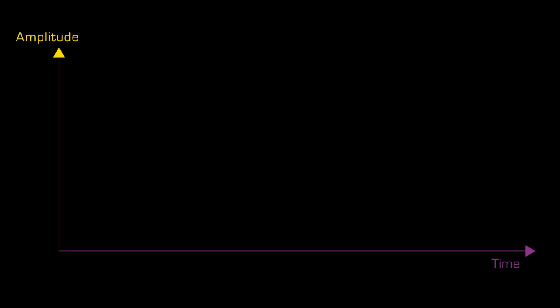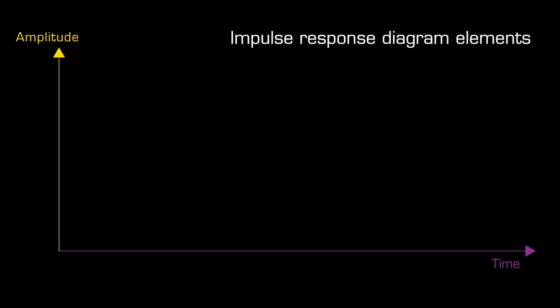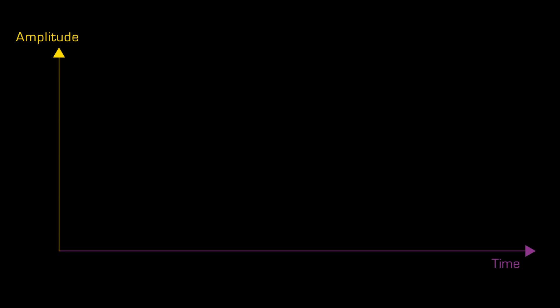The impulse response diagram has two axes: amplitude and time. Within these axes, five properties are shown.